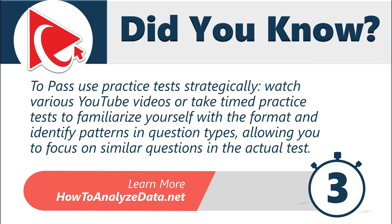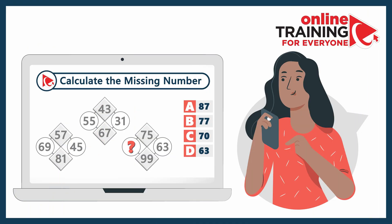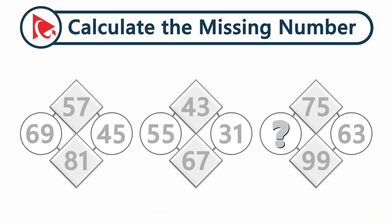Here's an interesting question with cool shapes. Try solving it on your own first, without looking up the answer. Each one of the cool-looking shapes has 4 numbers. The first shape has numbers 57, 45, 81, and 69. The second shape has numbers 43, 31, 67, and 55.